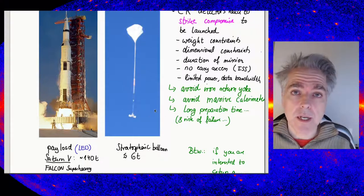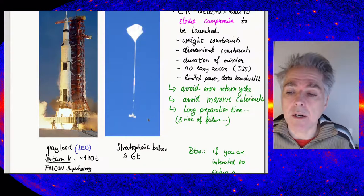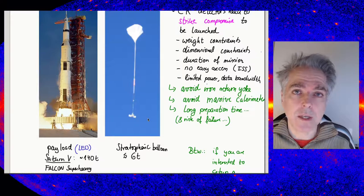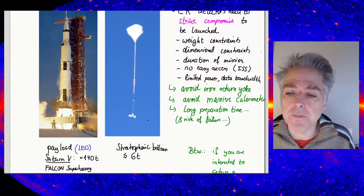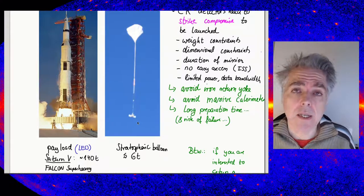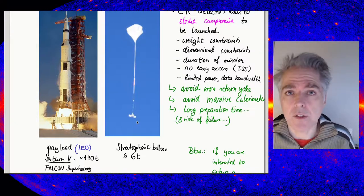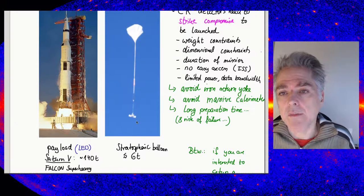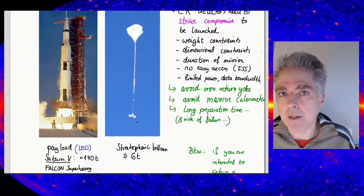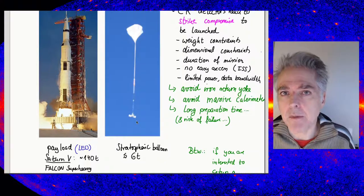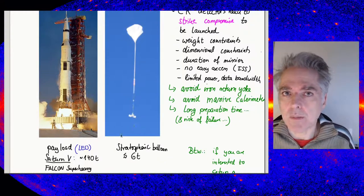Stratospheric balloons, on the other hand, are able to lift up to 6 tons to the stratosphere. In both cases, the size or dimension of the instrument you can fly is limited to something like 2 to 3 meters. You can make it a little bit bigger, but not very much—you cannot go to 20 meters.